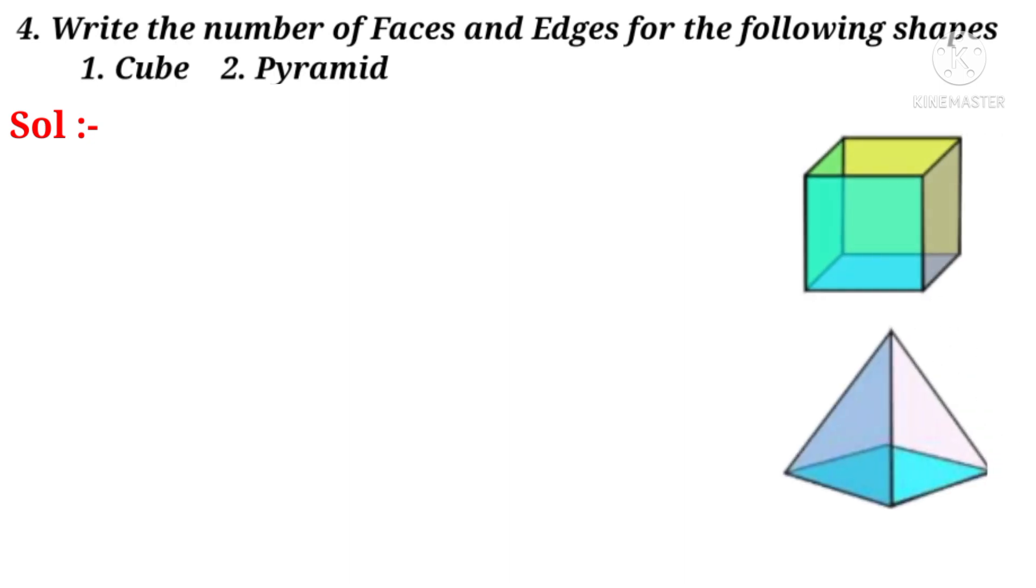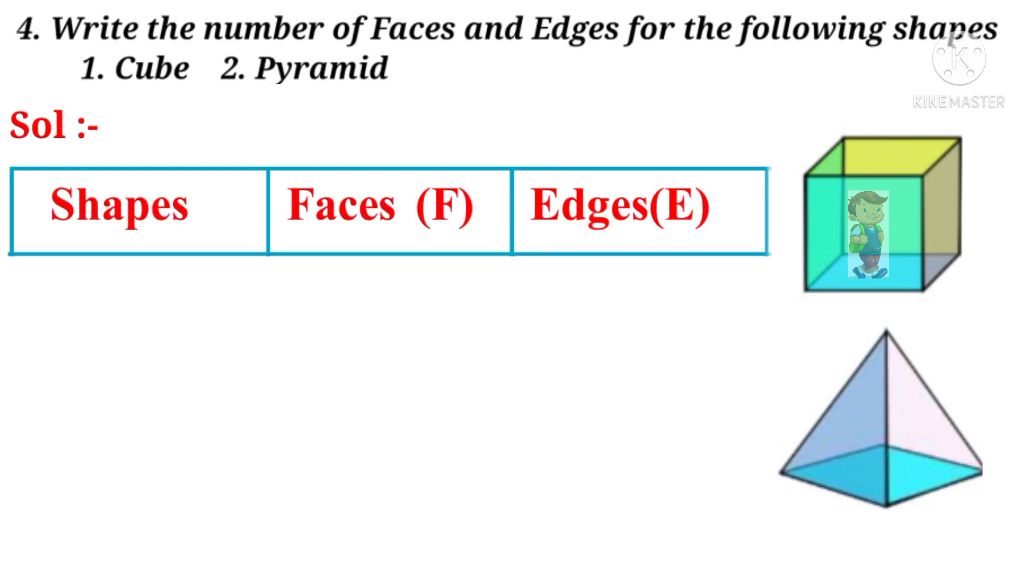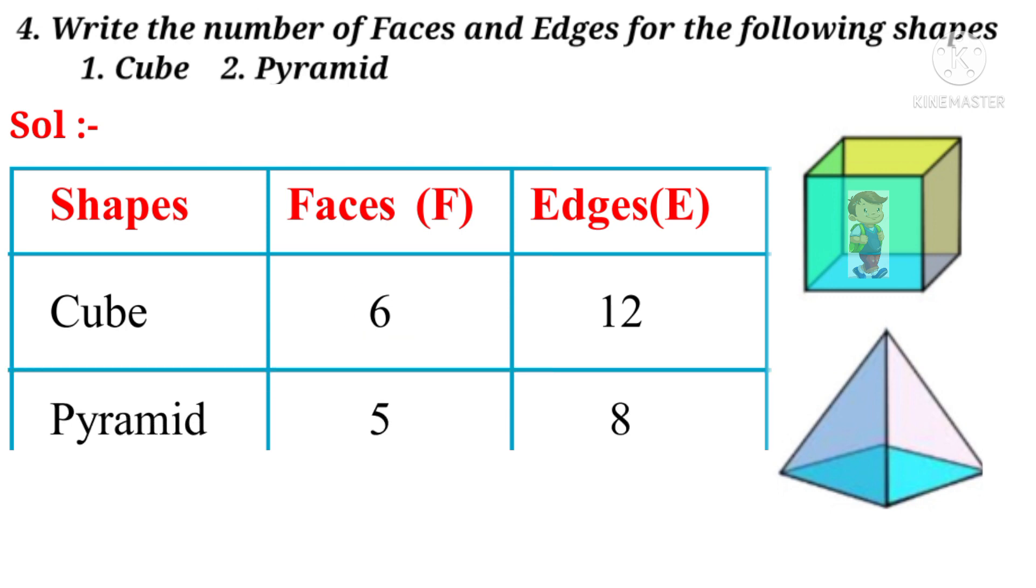Now fourth question. Write the number of faces and edges for the following shapes: 1. Cube, 2. Pyramid. Take the shapes of cube and pyramid. Let a boy enter into a room which is in the shape of a cube. He observed 4 faces on 4 sides and 1 flooring and 1 ceiling. So total 6 faces. On 6 faces, the line joining the corners or vertices, he observed 4 edges on the flooring, 4 edges on the sides and 4 edges on the ceiling. So total 12 edges.